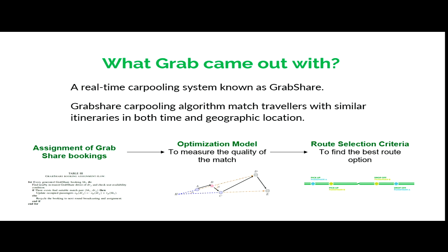What Grab came out with is a real-time carpooling system known as GrabShare. The GrabShare carpooling algorithm matches travelers with similar itineraries in both time and geographic location.